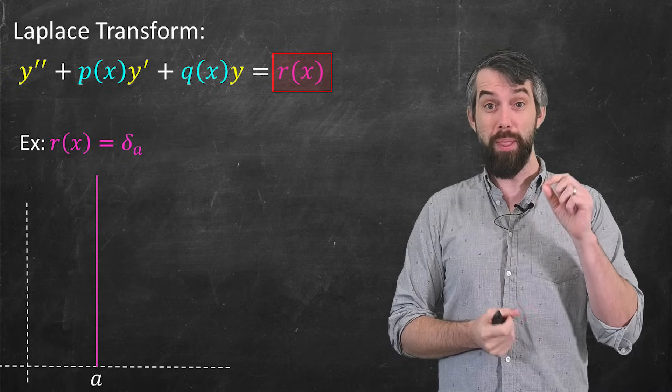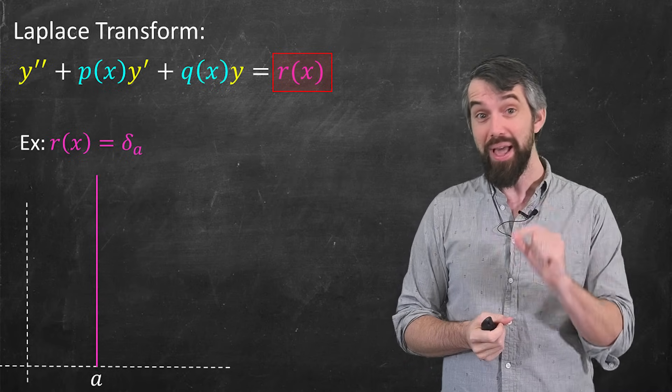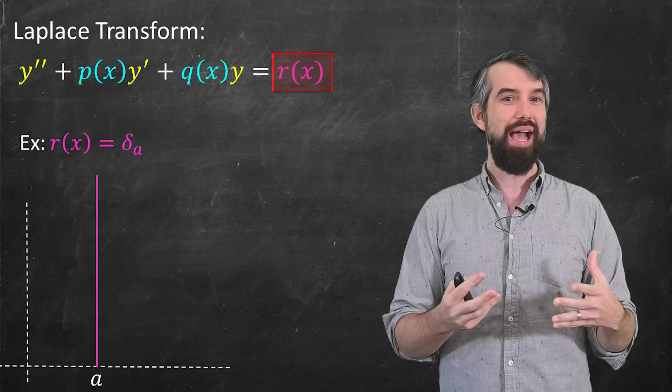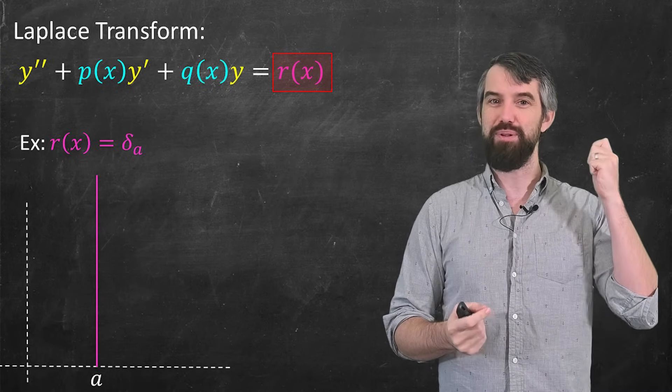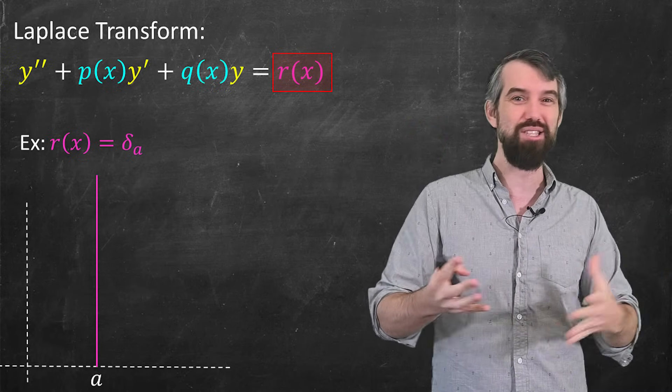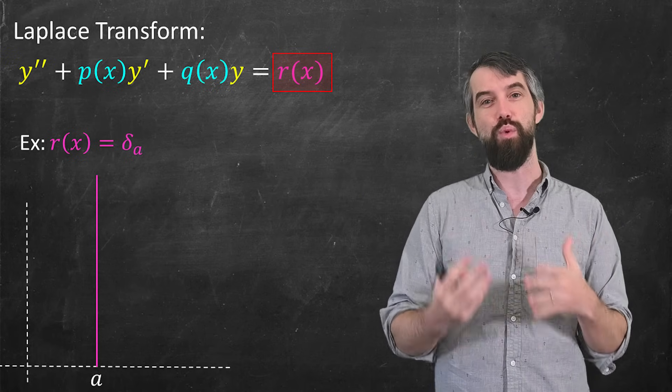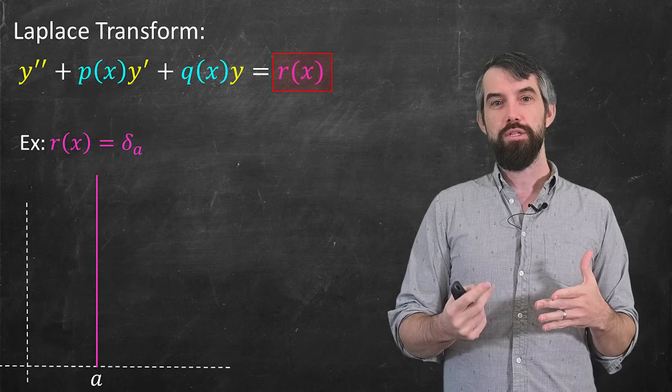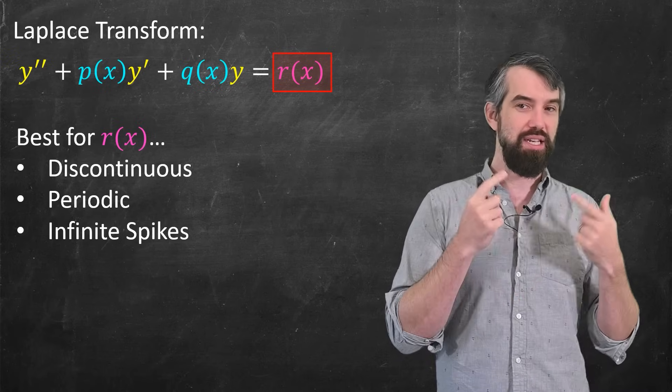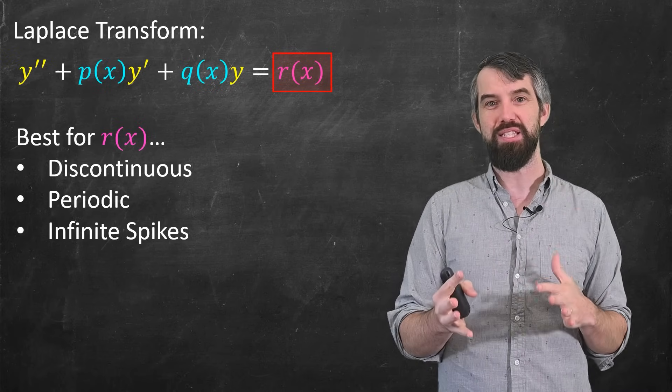Or it can have even a weirder thing, which is it can have something called a delta function, which is a spike at one spot. You can kind of imagine like you have a hammer hit that happens almost instantaneously, like a mass on a spring, and then you hit it with a hammer. You model that perhaps with a delta function, a spike at one spot.